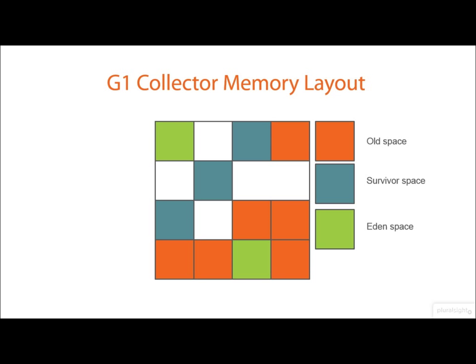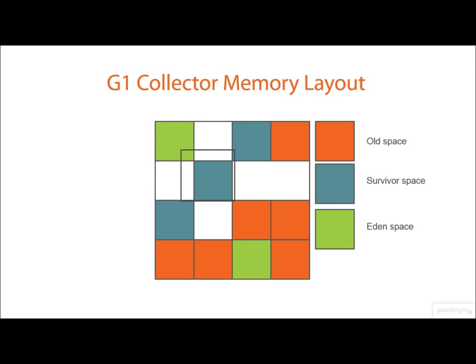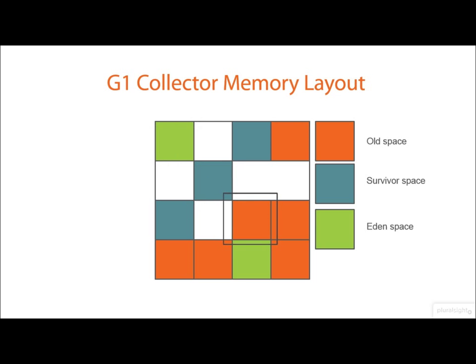As we can see here, we still have the concept of an Eden space, shown in green, a survivor space, shown in blue, and an old space, shown in orange.